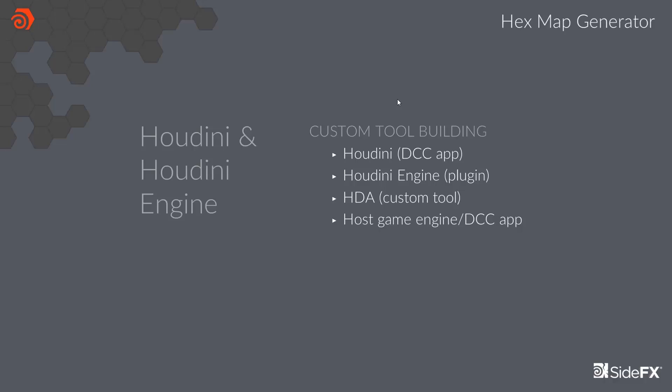For those of you who aren't familiar with Houdini and Houdini Engine, those two things are at the very core of the Hex Map Generator Tool, because without them there would be no Hex Map Generator Tool. Houdini is a full 3D application like any other DCC app on the market where you can do modeling, rigging, animation, effects, and rendering, but it's also different in that it's like a giant sandbox where you can take existing tools and make your own custom new tools. You can create these tools in Houdini, package them up as an HDA, and distribute them to people on your team. They can use that tool within host applications or game engines — in our case Unreal and Unity, but also Maya, Cinema 4D, and most recently we announced support for 3ds Max.